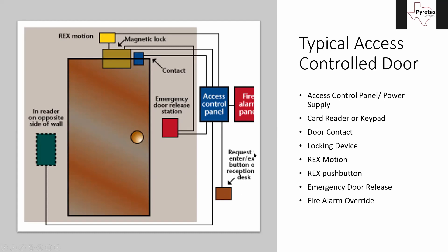The request to exit or enter button gets put at a receptionist's desk — I've seen these used more to let someone enter than exit. Typically the motion detector lets occupants exit freely, but the button also helps if someone stands at the door too long and the motion detector no longer sees them, or if something fails in the motion detector. That's also another reason for the emergency door release station.